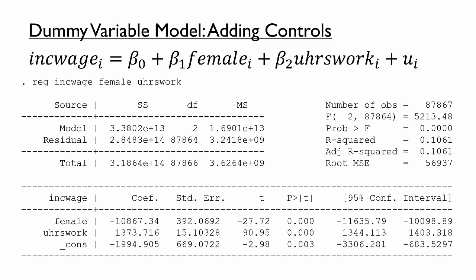For context, it is useful to take a quick look at the coefficient on the added control variable. The positive coefficient indicates that working more hours each week is associated with higher annual pay, as we would expect. Turning to the estimate of beta 1, we see that the coefficient is still negative, but is smaller in magnitude than the model without the control variable. It tells us that women earn on average almost $11,000 per year less than men who work the same number of hours each week. Our earlier estimate indicated that women earn on average almost $18,000 per year less than men without adjusting for differences in hours worked.